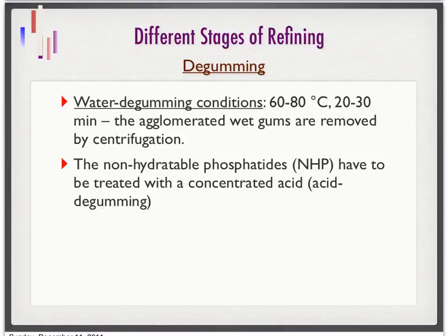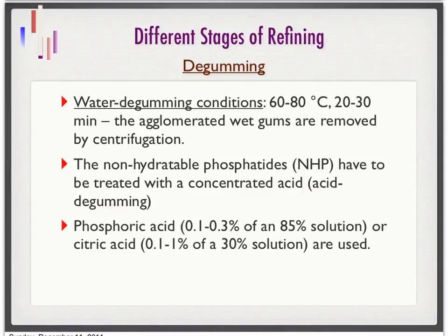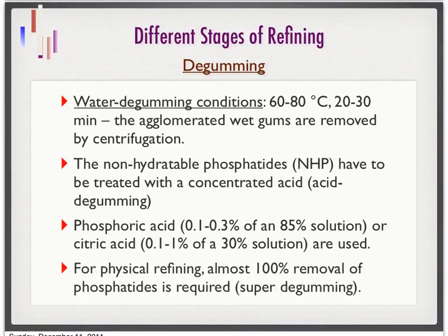This process is called acid degumming. We can use phosphoric acid at 0.1 to 0.3% of the 85% solution, or citric acid at the corresponding concentration. The degumming step is especially very important in physical refining — we need to remove almost 100% of phosphatides. This process is called super degumming to prepare the oil before it goes through physical refining.